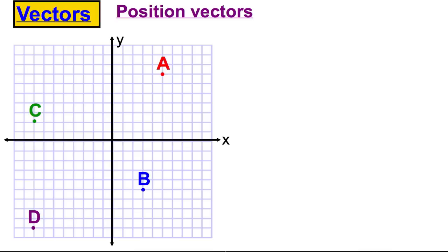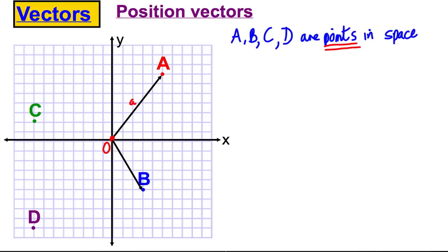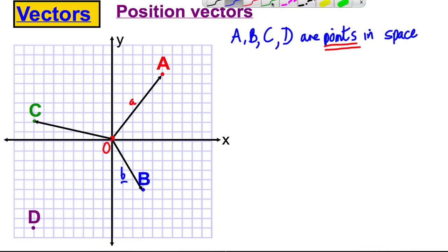Imagine I said to you: if I start at the origin and go to point A — firstly, let me say that points A, B, C, and D are points in space. They are not vectors; they are coordinates or points in space. Now, I'm going to call the vector that gets me from the origin to point A as little a, from the origin to B as little b, from the origin to C as little c, and from the origin to D as little d.